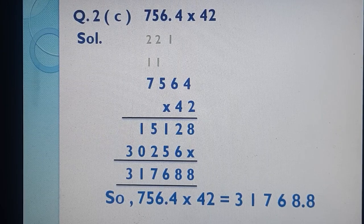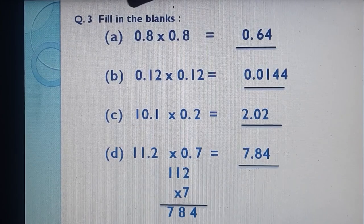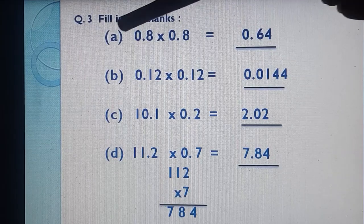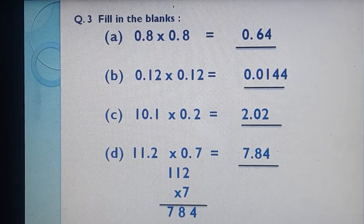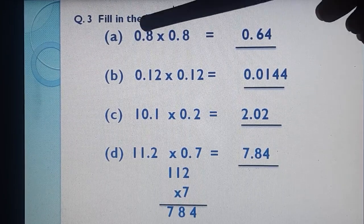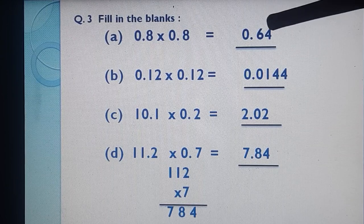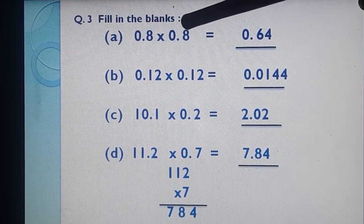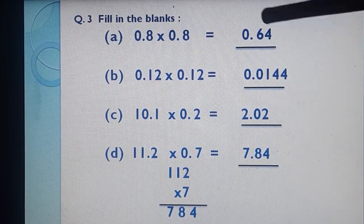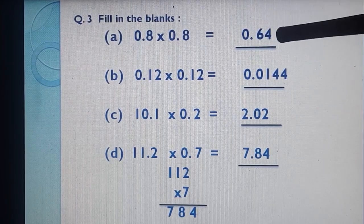Very simple questions these are. You have to do simple multiplication and then at last you put the decimal. Question number 3, fill in the blanks. Part A: 0.8 × 0.8. First simple multiplication: 8 eights are 64. After decimal: 1 and 1, that's 2 digits. Start counting from last — 1 and 2 — put decimal. Our answer is 0.64.